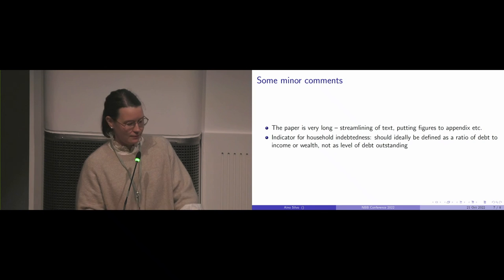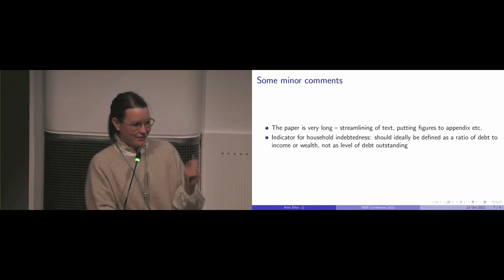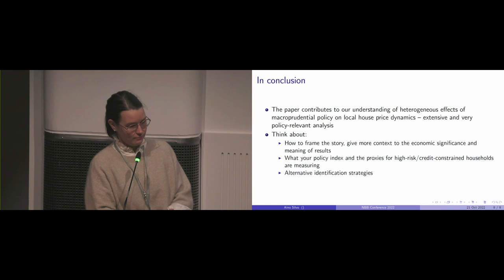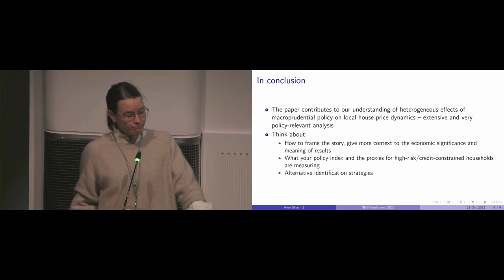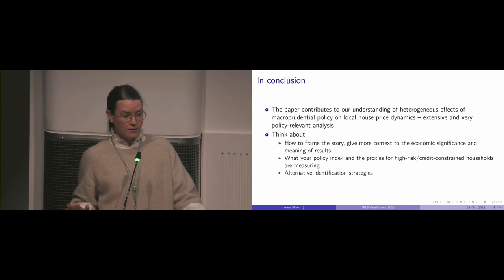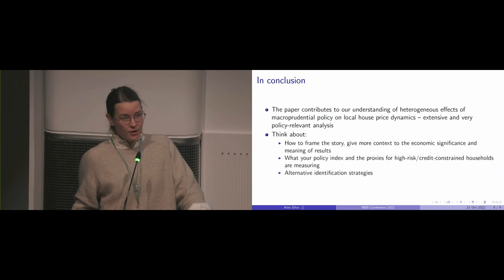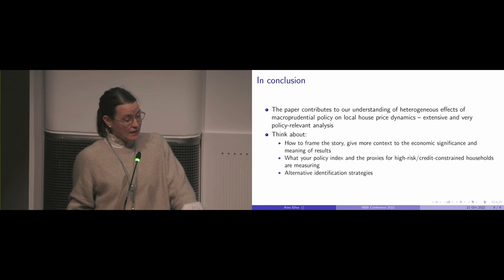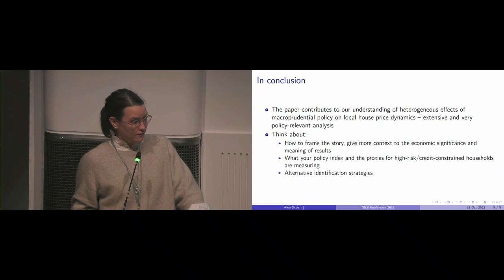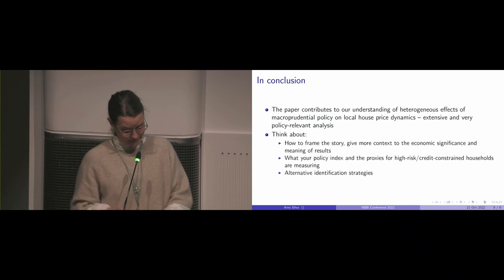A minor comment: the paper is long and you can streamline it. Your indicator for household indebtedness — I don't know if it's a data availability issue — but you should ideally define it not as a ratio of outstanding mortgages but as a ratio of debt to income or wealth or assets. To conclude, the paper is very nice, interesting work and it contributes to our understanding of heterogeneous effects of macroprudential policy at the local level. You have a lot of material in the paper already — basically all of the comments I have, you already touched upon — so it's just a question of how to frame it, how to focus it, and how to make the case more convincing by thinking about the policy index, the proxies you use, and the identification strategy. Thanks.